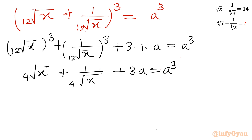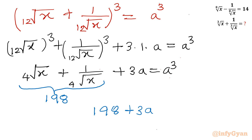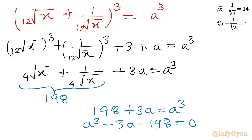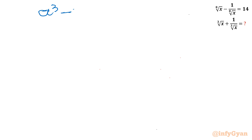From equation 1, 4th root of x plus 1 over 4th root of x equals 198. So this equation becomes 198 plus 3a equals a cube. Taking all terms to the right hand side: a cube minus 3a minus 198 equals 0. Remember a is our defined expression 12th root of x plus 1 over 12th root of x. Let's solve this cubic equation.